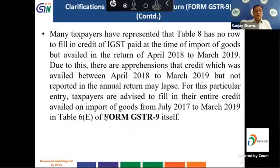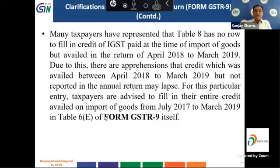Many taxpayers have represented that Table 8 has no row to fill in credit of IGST paid at the time of import of goods but availed in returns from March 2018 to March 2019. There are apprehensions that credit availed between April 2018 to March 2019 but not reported in the annual return may lapse. For this, taxpayers are advised to fill their entire credit availed on import of goods from July 2017 to March 2019 in Table 6E of form GSTR 9.